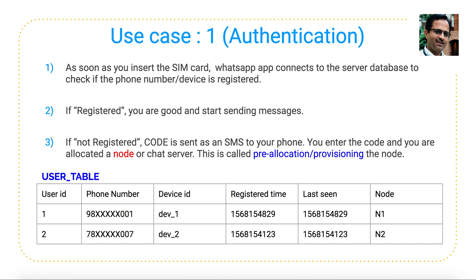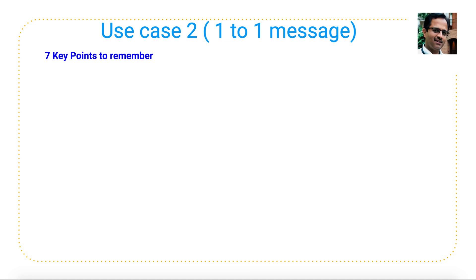As soon as you submit, information like user ID, phone number, device ID, registration time, and last seen gets entered into the database at the backend server. At the same time, WhatsApp will allocate a node for your device — this is called pre-allocation or provisioning of the node. That means you will always be connecting to a certain node at any point of time to get your chat information.